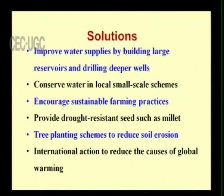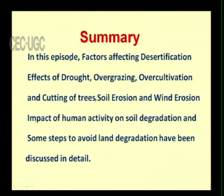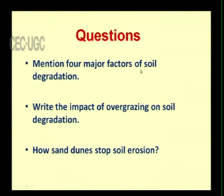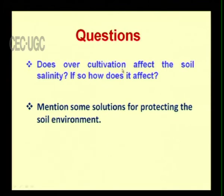In summary, this episode discussed the factors affecting desertification, the effects of drought, overgrazing, over-cultivation and cutting of trees, soil erosion and wind erosion, the impact of human activity on soil degradation, and steps to avoid land degradation. Review questions include: mention four major factors of soil degradation; describe the impact of overgrazing on soil degradation; how do sand dunes stop soil erosion; does over-cultivation affect soil salinity and if so how; and mention some solutions for protecting the soil environment.